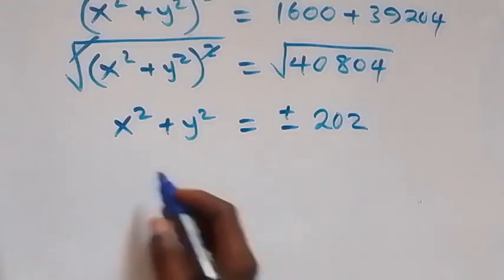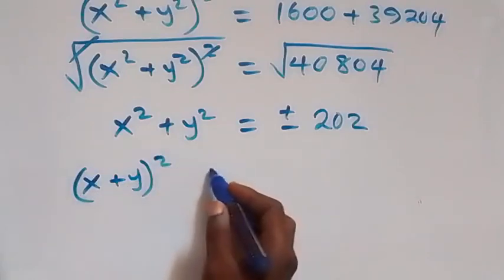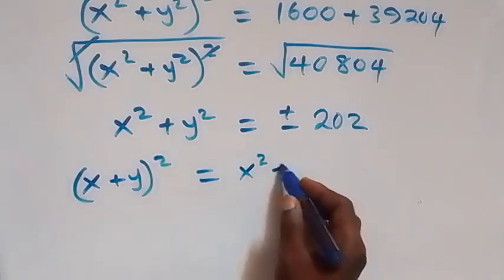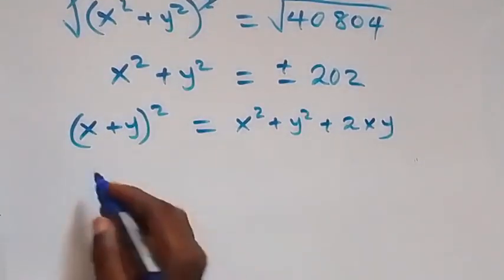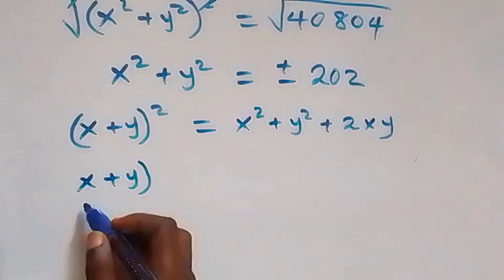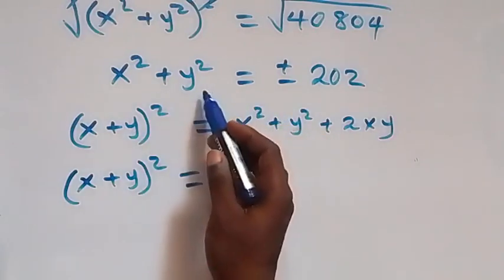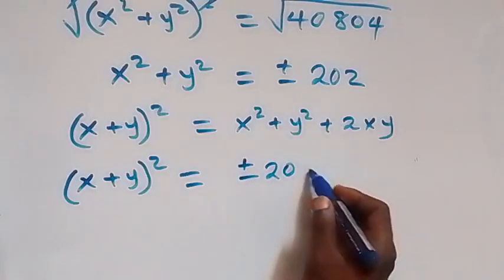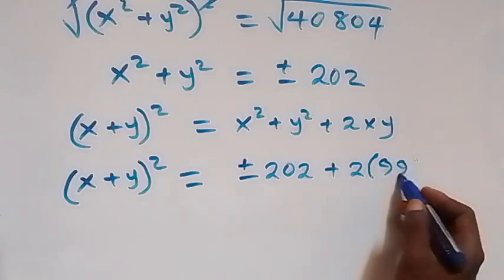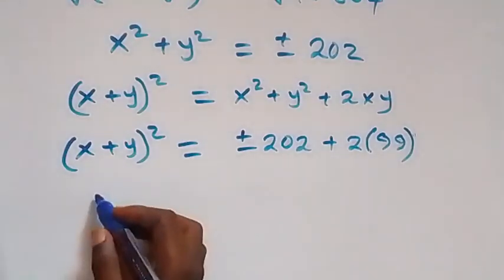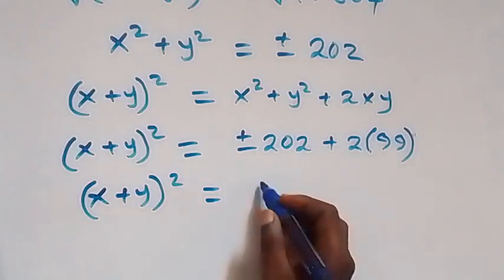Now, to find x plus y, recall the identity: (x plus y) squared equals x squared plus y squared plus 2xy. Substituting x squared plus y squared as plus or minus 202, and 2xy equals 2 times 99 equals 198, we get (x plus y) squared equals 198 plus or minus 202.